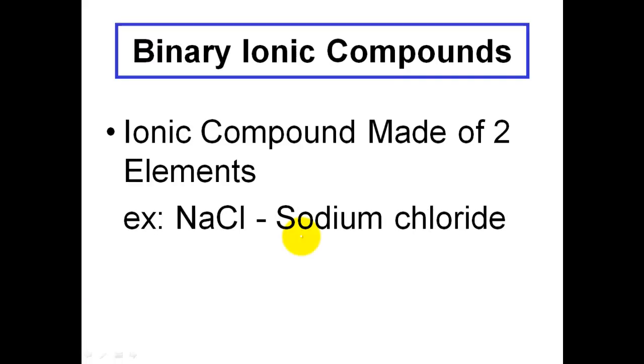Up until now we've been learning about binary ionic compounds, although we have not used that term. Those are simply ionic compounds that are made up of two different elements. The elements that are in the slide here are going to be sodium and chlorine, making sodium chloride.